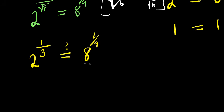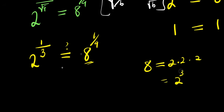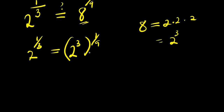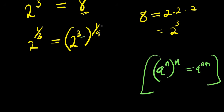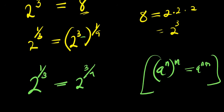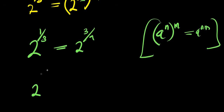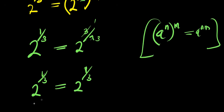Since 8 equals 2 to the power of 3, the right side becomes 2 to the power of 3 raised to the power of 1 over 9. Applying the index law, we multiply the exponents: 3 times 1 over 9 equals 3 over 9, which simplifies to 1 over 3. So the right side is 2 to the power of 1 over 3, which matches the left side exactly.